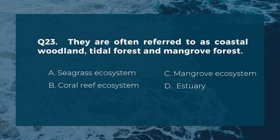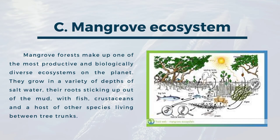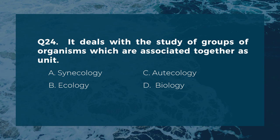Question twenty-three: they are often referred to as coastal woodland, tidal forest, and mangrove forest. A) seagrass ecosystem, B) coral reef ecosystem, C) mangrove ecosystem, D) estuary. The correct answer is C, mangrove ecosystem. Mangrove forests make up one of the most productive and biologically diverse ecosystems on the planet. They grow in a variety of depths of salt water, their roots sticking up out of the mud, with fish, crustaceans, and a host of other species living between tree trunks.